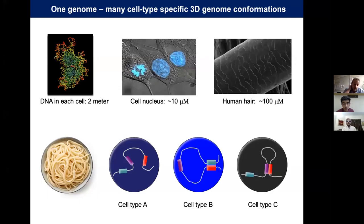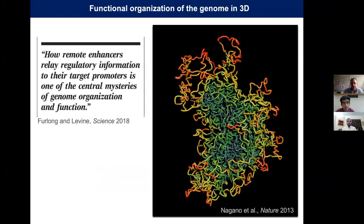We know from many studies across the last 20 years that different cell types have different 3D genome signatures — 3D genome folding — and that contributes to their gene expression programs. The big question I'm interested in is how remote enhancers relay regulatory information to their target promoters, which is one of the central mysteries in genome organizational function.